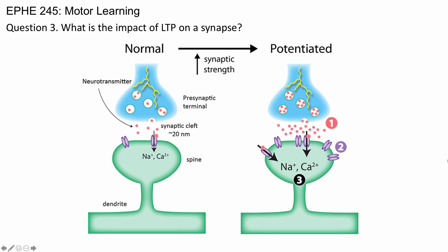So what is the impact of LTP on a synapse? It results in an increase in synaptic strength, and that increase in synaptic strength is seen in terms of the amount of neurotransmitter being released and the number of receptor sites on the postsynaptic neuron.